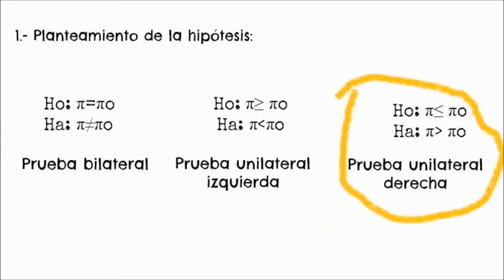Número 3, prueba unilateral derecha: la hipótesis nula se plantea como la proporción de la población es menor o igual a la proporción que se desea probar. La hipótesis alterna se plantea como la proporción de la población es mayor a la proporción que se desea probar.